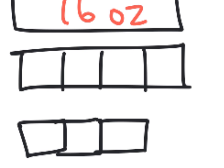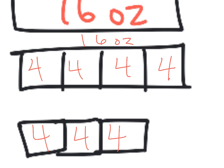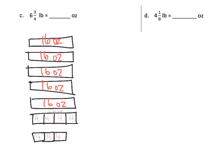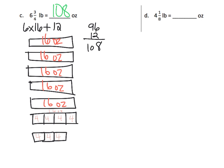This last pound is also 16 ounces but it's been chopped up into four pieces, so each piece is four ounces. We've got six copies of 16, plus we're going to add 12 — because that's four plus four plus four from the three quarters. Six copies of 16 is 96, and 96 plus 12 is 108. So our answer is 108 ounces.